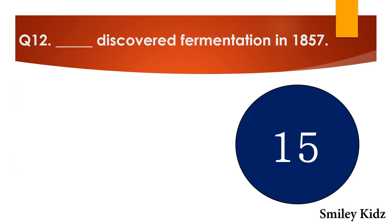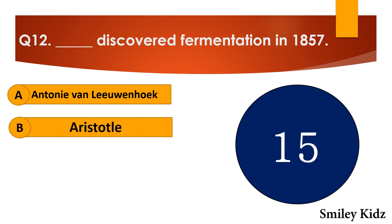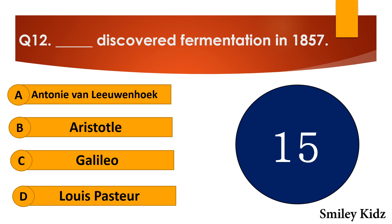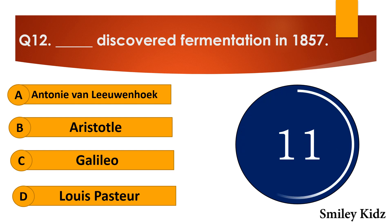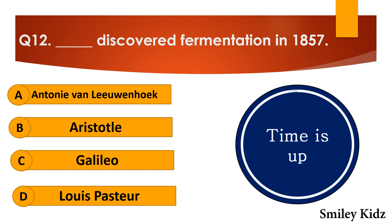Question number twelve: Dash discovered fermentation. The options are: A. Antony van Leeuwenhoek, B. Aristotle, C. Galileo, or D. Louis Pasteur. Your time starts now. Your time is up and the right answer is option D — Louis Pasteur. Louis Pasteur discovered fermentation in 1857.